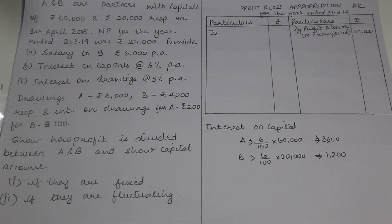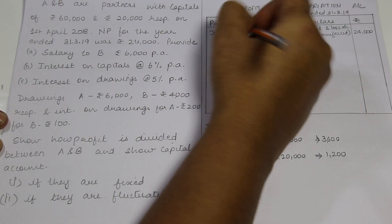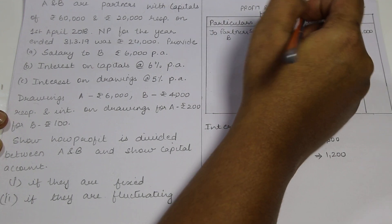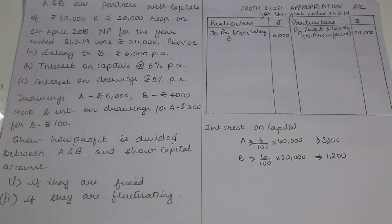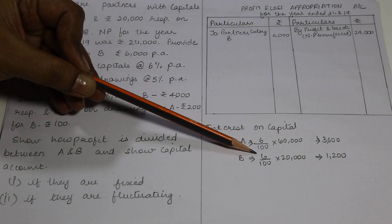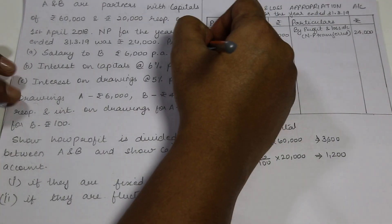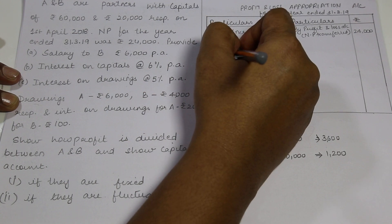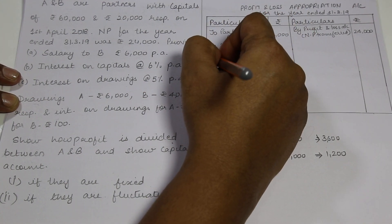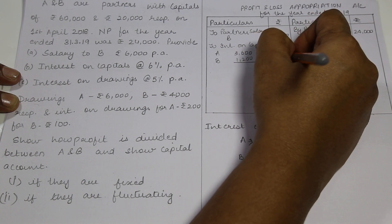The first appropriation is partner's salary to B — Rs. 6,000. Next, interest on capital: A's capital is Rs. 60,000 and B's capital is Rs. 20,000, at the rate of 6% per annum. So A gets Rs. 3,600 and B gets Rs. 1,200. Interest on capital: A's capital account Rs. 3,600, B's capital account Rs. 1,200, totalling Rs. 4,800.